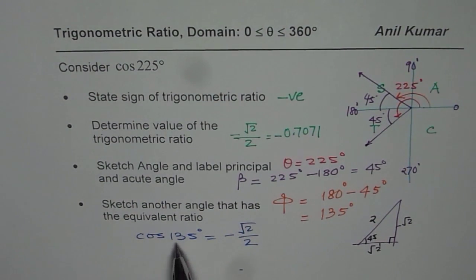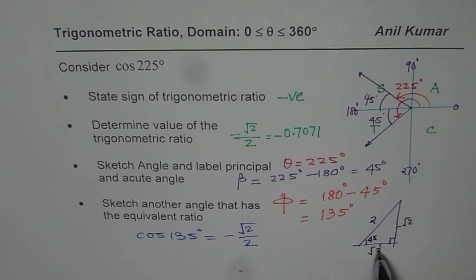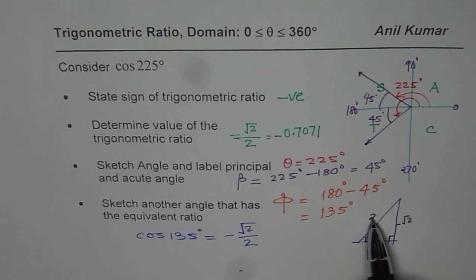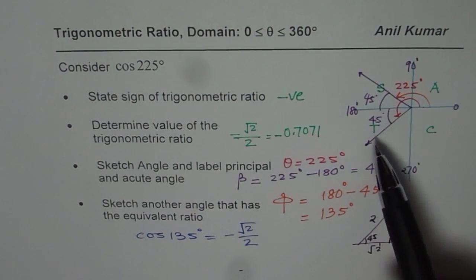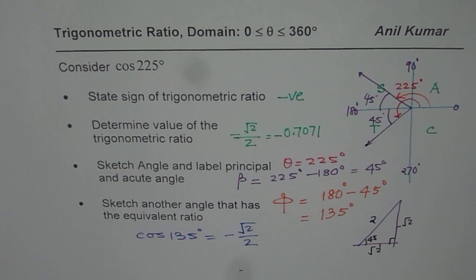So, that gives you the value of the cosine. Adjacent over hypotenuse. So, it is square root 2 over 2. Since we are in quadrant 2 or 3, its value is negative in nature. So, that gives you a very good picture of how to see your trigonometric ratios in the domain 0 to 360 degrees.